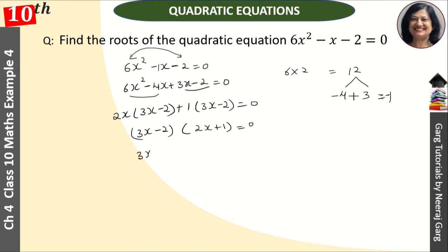This means 3x - 2 = 0 and 2x + 1 = 0. So 3x = 2, and x = 2/3. And here, 2x = -1, so x = -1/2.